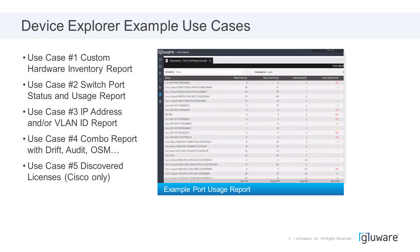One of the most common and popular use cases is that Glueware, through device discovery, interrogates the hardware. For Cisco, we actually go down to line cards and modules, pull serial numbers, and capture a very detailed hardware inventory that can all be generated out in a report. This functionality was only available before in the utility data export, which had a fixed report. Now that whole functionality is available in Data Explorer, and you have full capability to customize the report relating to the hardware inventory.